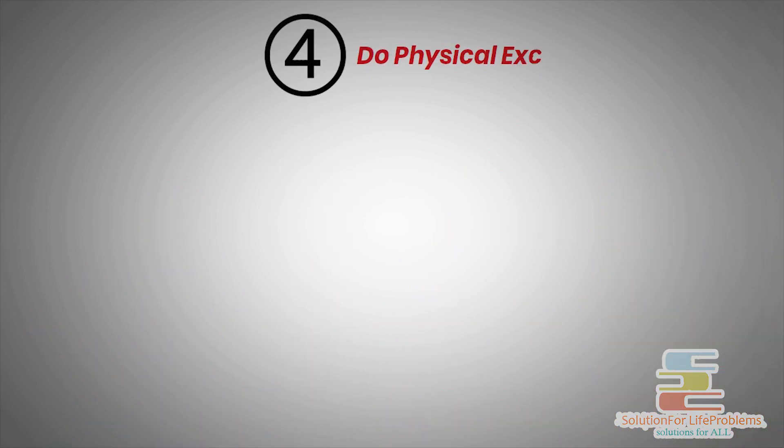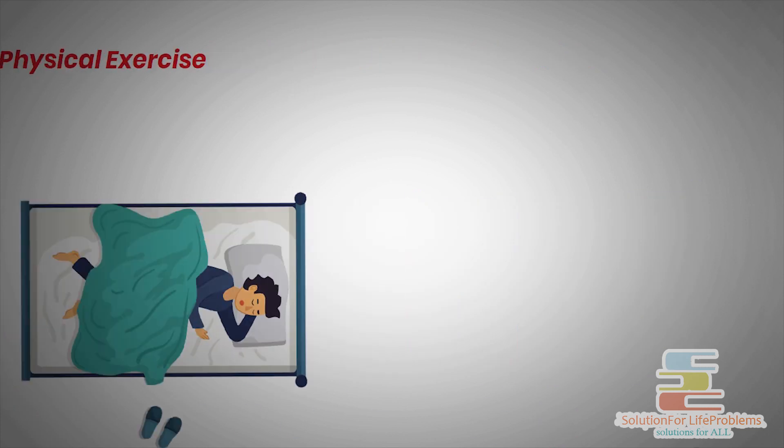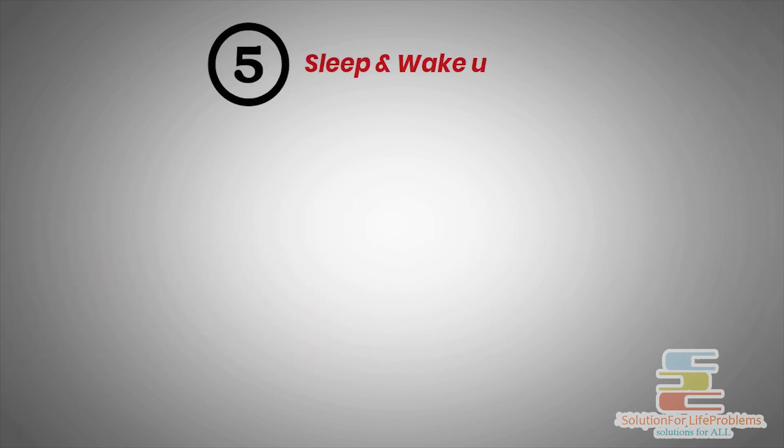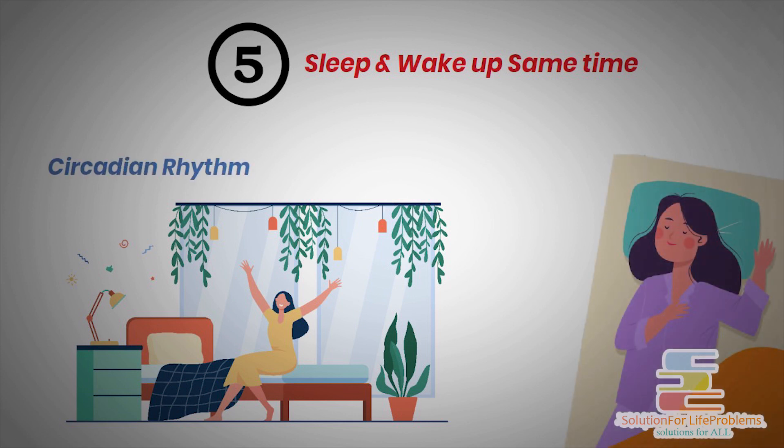Number 4, make sure you do some physical exercise during the day. Physical movement during the day will make you sleep earlier. Number 5, try to sleep and wake up at the same time every day. This way, body forms a circadian rhythm and gets habituated to sleep or wake up at a fixed time automatically.